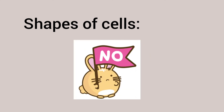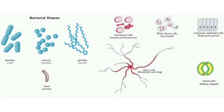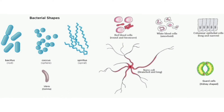Next, shapes of cells. All organisms have cells of different shapes because each organism has a different function. For example, bacteria: bacillus is rod-shaped, coccus is sphere-shaped, spirillum is spiral-shaped, vibrio is comma-shaped. In human cells, red blood cells are round and biconcave in shape, and white blood cells are amoeboidal in shape. All cells may have different shapes.